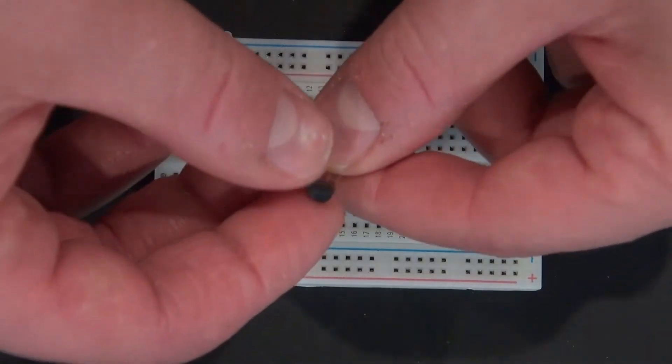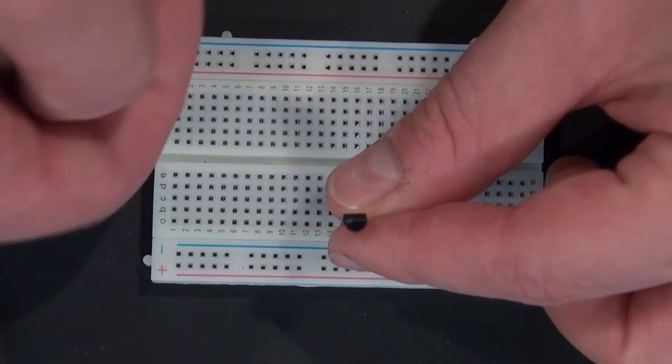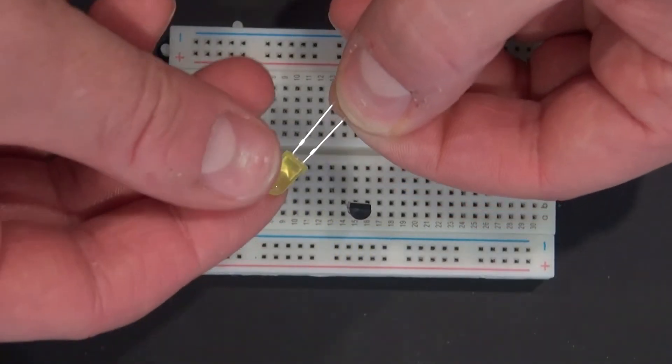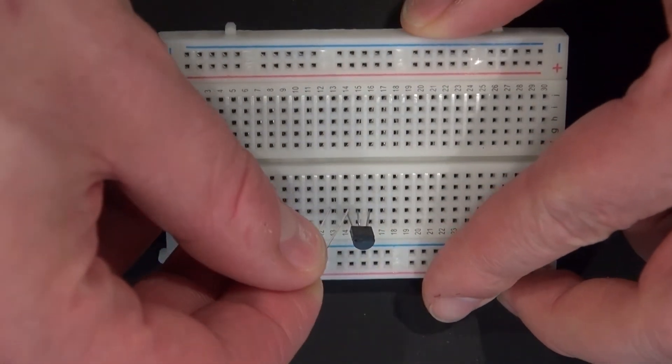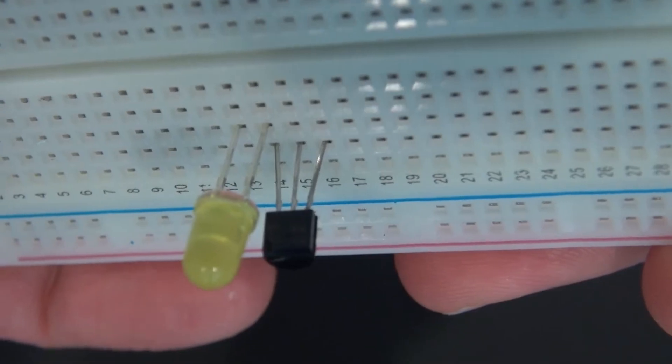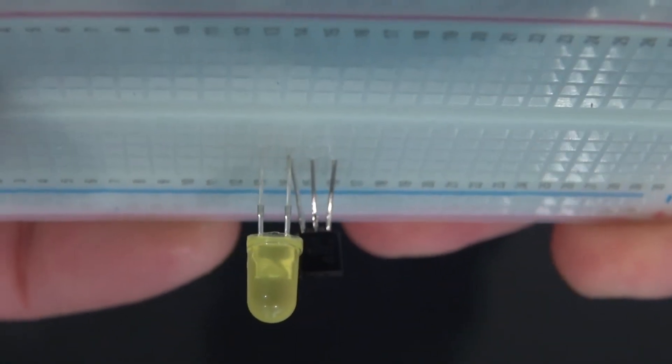Now I'm going to start by taking the transistor and putting it directly on the breadboard where the flat side is facing that direction. Now take your LED and connect the anode of the LED to the collector of your transistor, just like that.